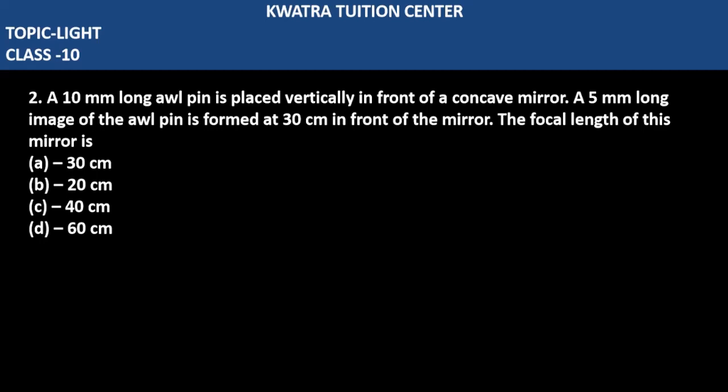Let's start with question number 2. A 10 mm long awl pin is placed vertically in front of a concave mirror. A 5 mm long image of the awl pin is formed at 30 cm in front of the mirror. The focal length of this mirror is—so basically we have to find F in this case.